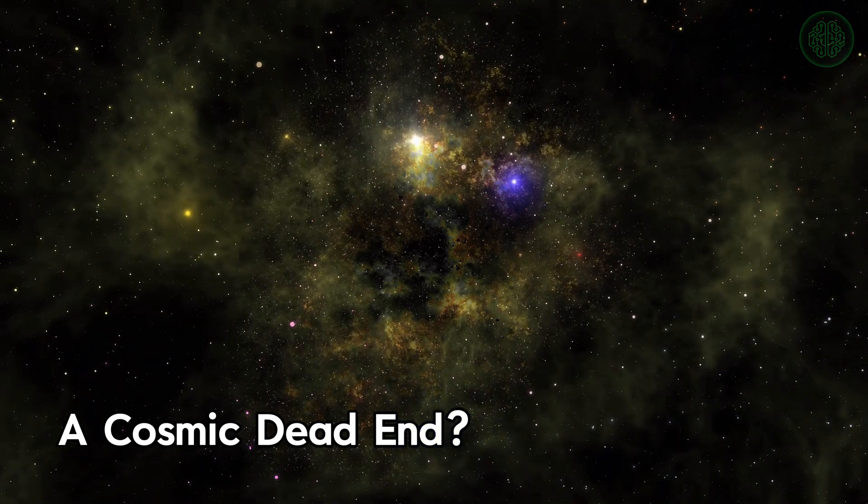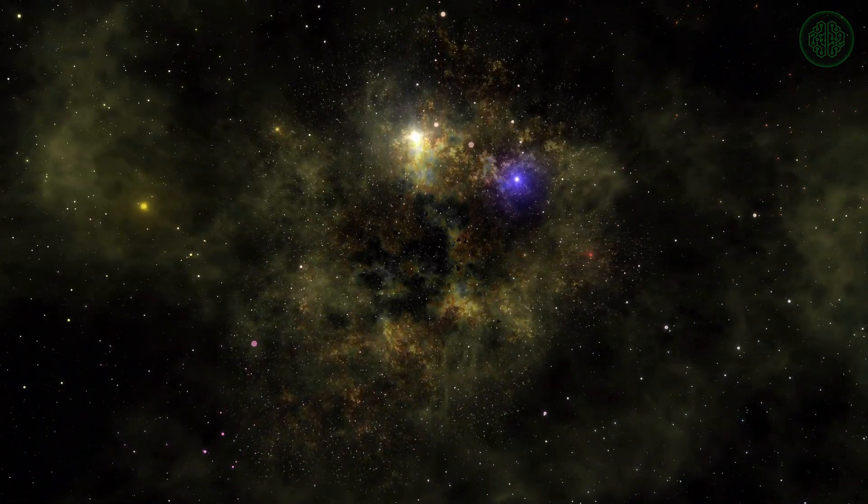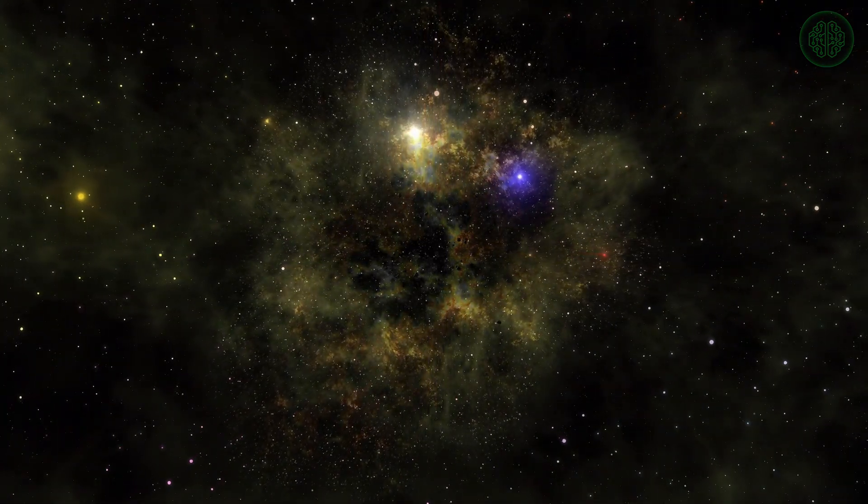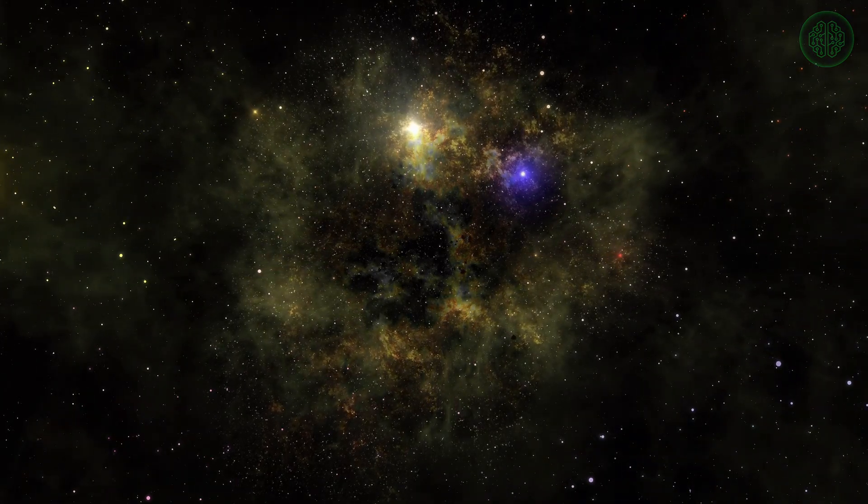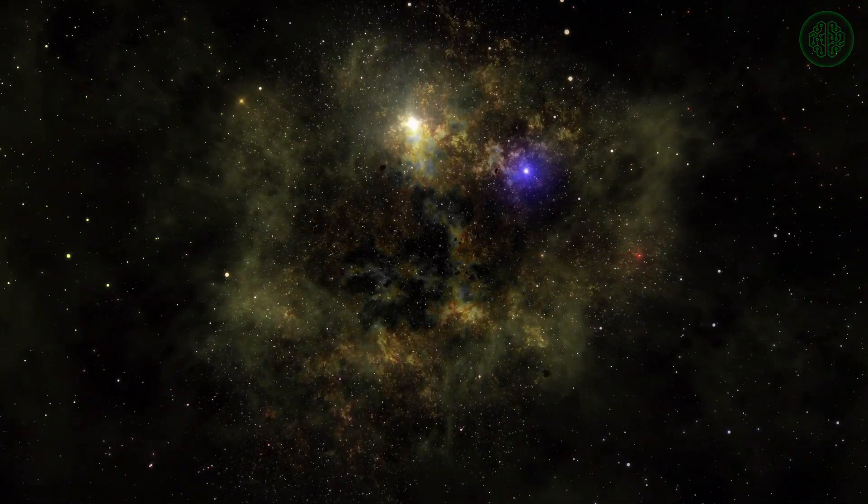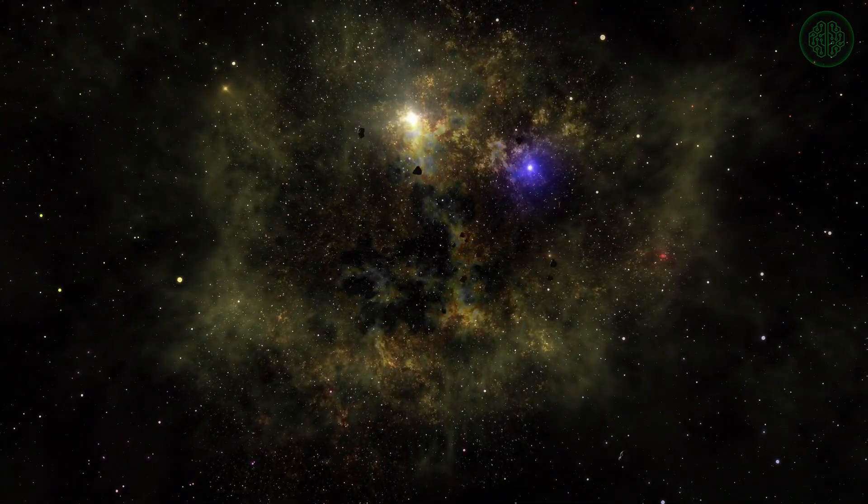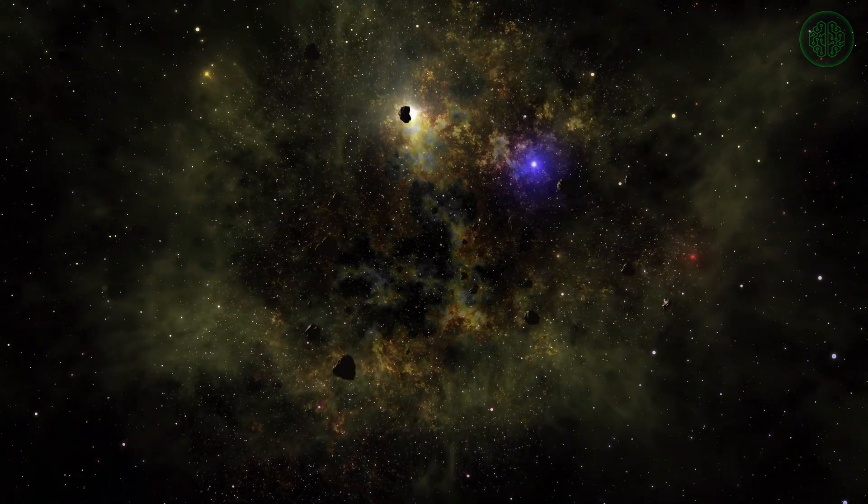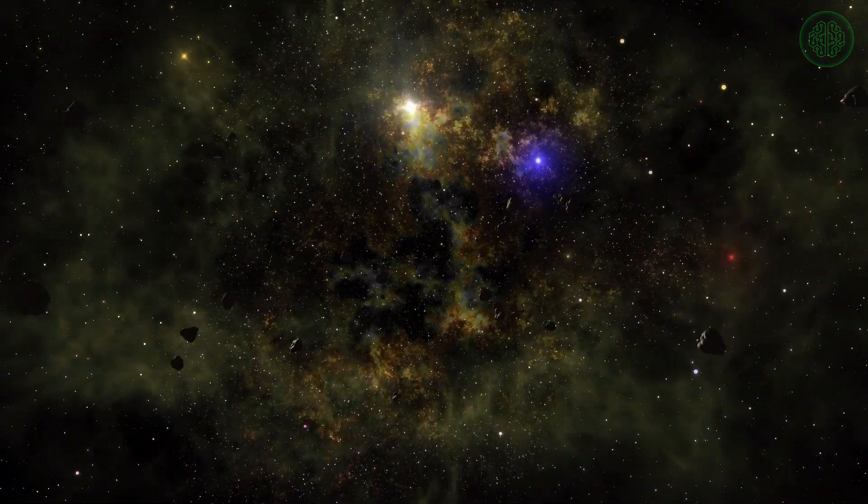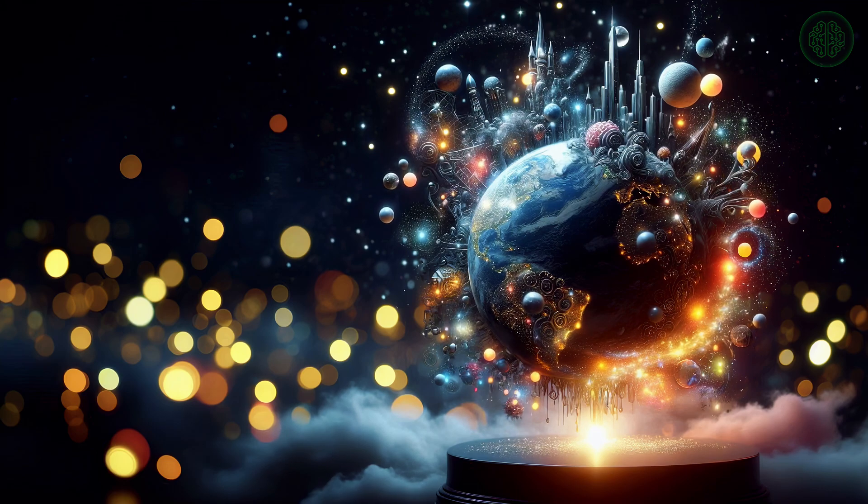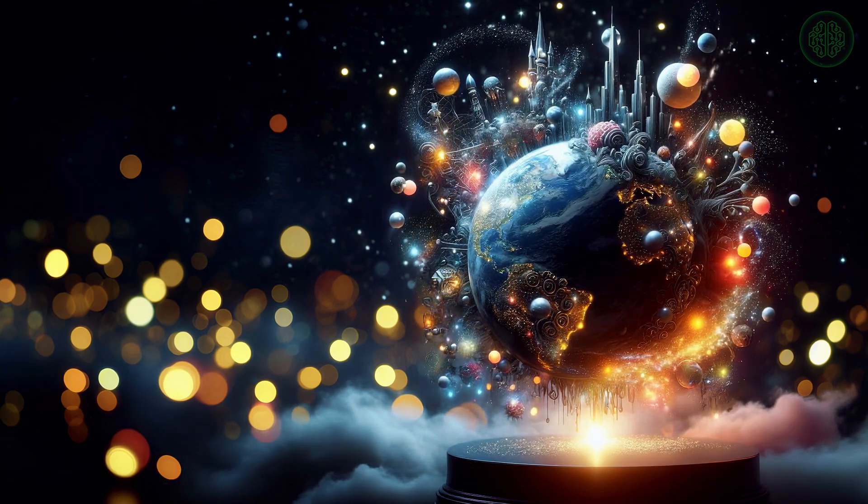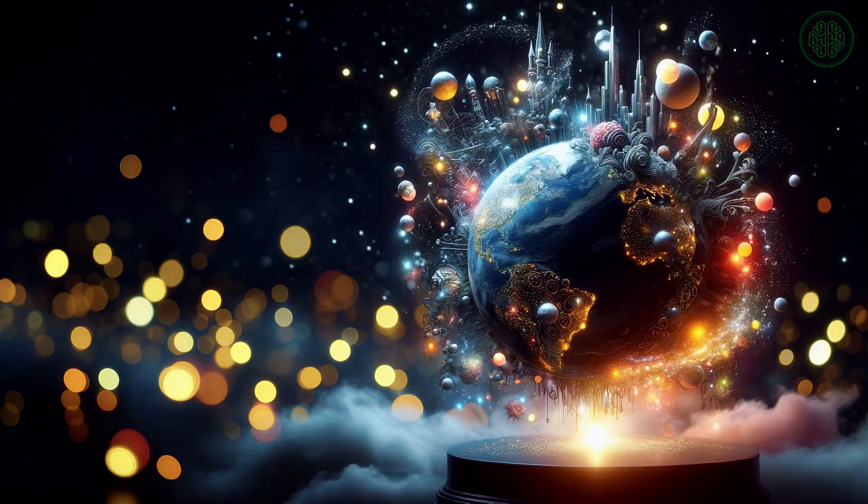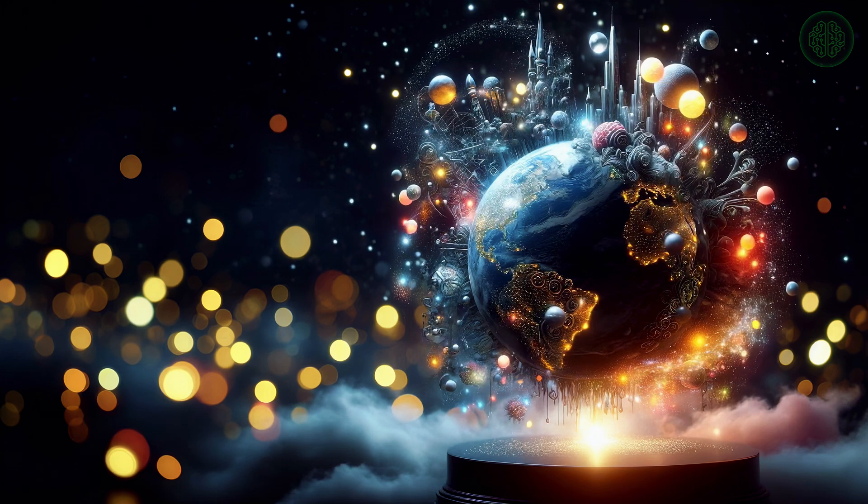The Great Filter. A particularly sobering explanation for the Fermi Paradox is the Great Filter Theory. This theory suggests that there is a barrier or a series of barriers that prevent life from developing beyond a certain point. This filter could be at the very beginning of life's emergence, making the jump from non-living matter to simple organisms exceedingly rare.